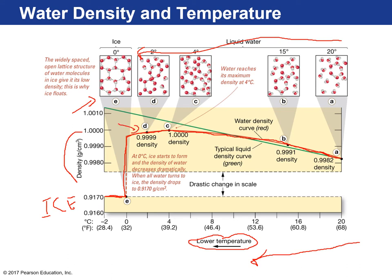Ice floating seems normal because we see it every day in a glass of water, but it is very unusual. Typically, for most substances — the green line on the graph — as you decrease temperature, density continually increases even when it turns into a solid. For example, solid iron sinks in liquid iron. With water, ice is the opposite — it floats. Another unusual property: water expands by about 9% when it freezes, because forming that three-dimensional crystalline structure forces molecules to expand outwards.